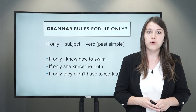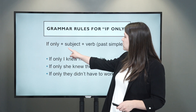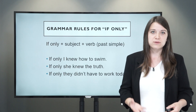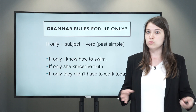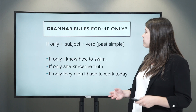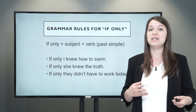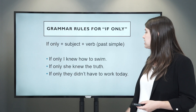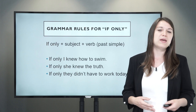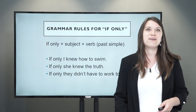Now let's look at another subjunctive form: 'if only.' Again, this is for imaginary situations. We form it with 'if only' plus the subject plus the verb in the past simple. For example, 'If only I knew how to swim' — obviously in reality you do not know how to swim. 'If only she knew the truth' — maybe this person would react differently if they knew the truth. 'If only they didn't have to work today' — if they didn't have to work, maybe we could do something fun, but it's not a real situation.